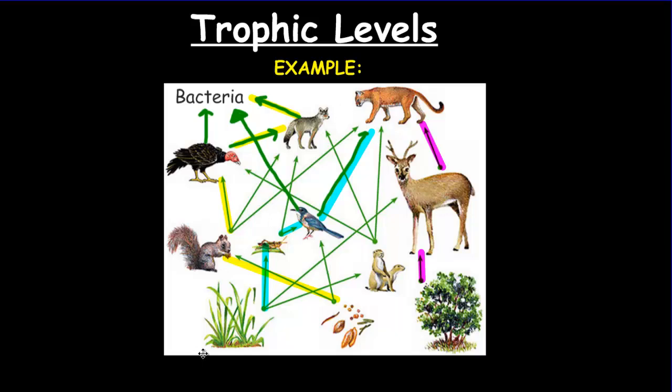We'll start with the lowest of the trophic levels — the producer level. That's where all the plants and other producers are located in an ecosystem. Producers take sunlight and turn it into chemical energy for themselves and for the other organisms in an ecosystem. So I'm labeling the grasses, grains, and trees as our producer level.